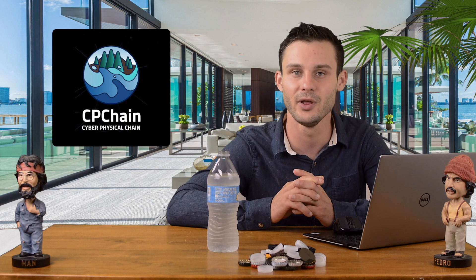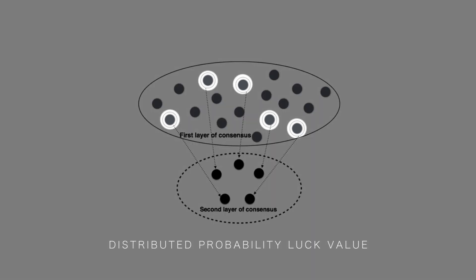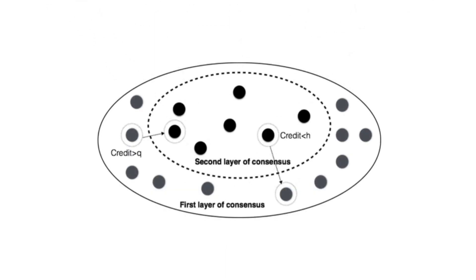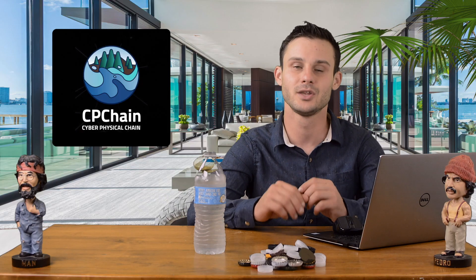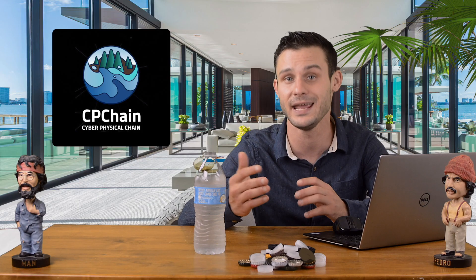CP Chain will implement node credibility, where the trust and role of a node is predetermined. The election process implements a distributed probability-luck value for randomness, which helps prevent targeted attacks and the controlling of the behavior of the CP Chain network. In the second layer of consensus, the block packing verification and the whole network broadcast is completed. Consensus agreements last for X number of rounds, and then re-elections happen. During the process of adding a block, the credit value of the node will be updated. If there is a high amount of downtime or malicious behavior, the credit value will go down a certain threshold, and that node could be deleted from the committee and further elections.